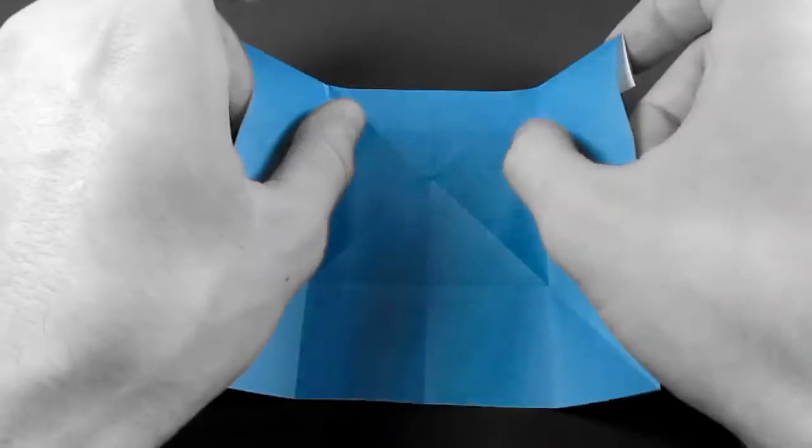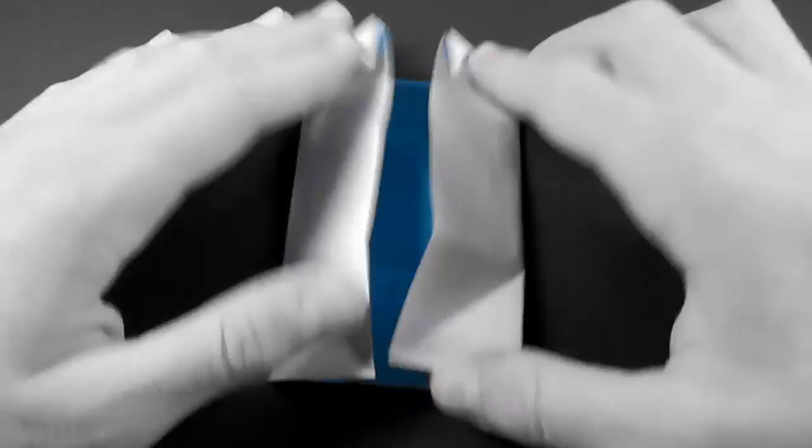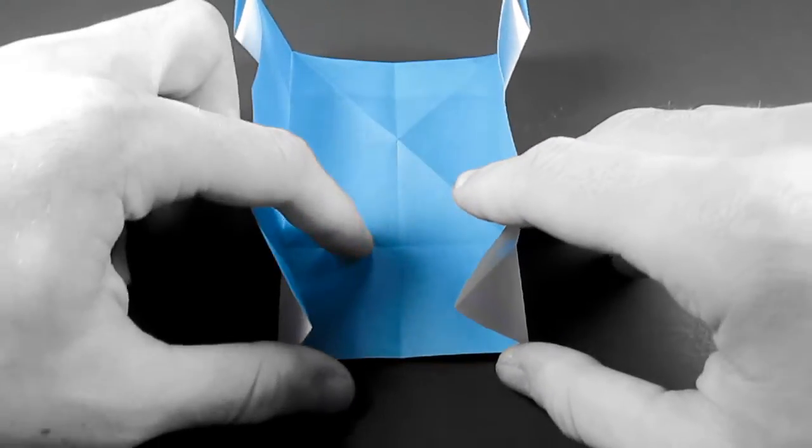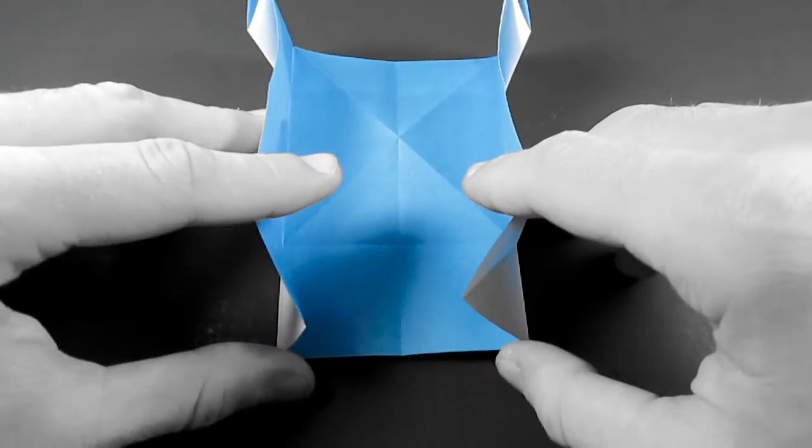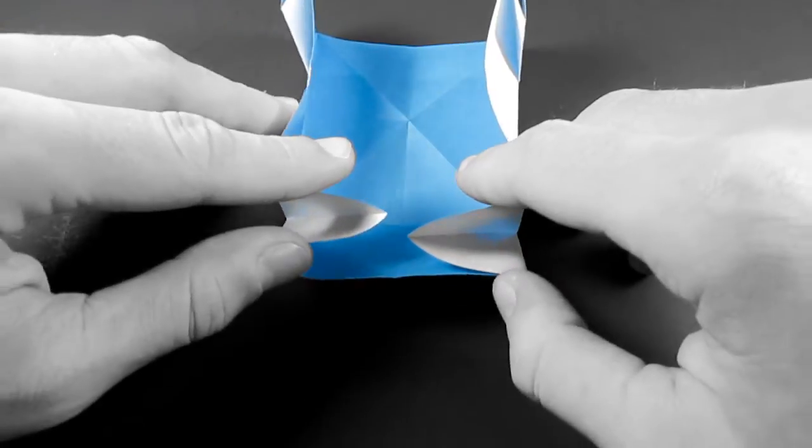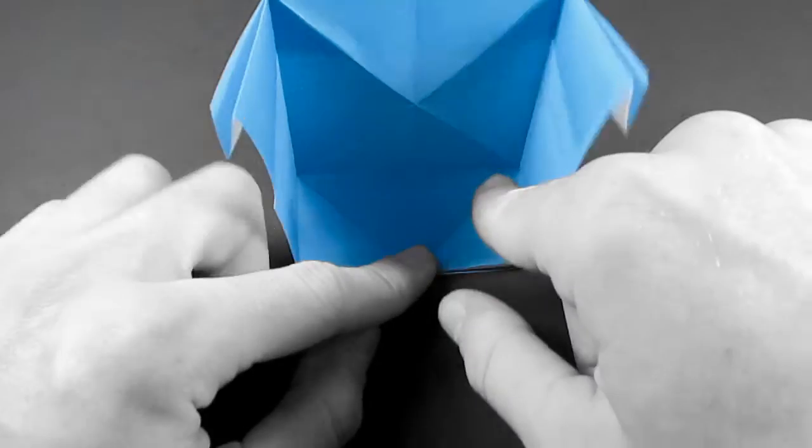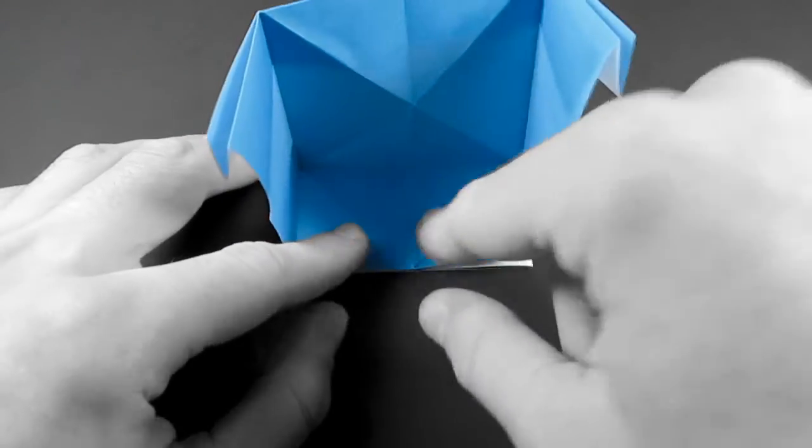Now we're going to turn over and bring these edges up at 90 degrees like this, so they're standing straight up. And now we're going to bring up this edge here, the edge closest to us. And as we do that, just squeeze these folds in. They'll want to fold in anyway, but all we have to do is help them along.